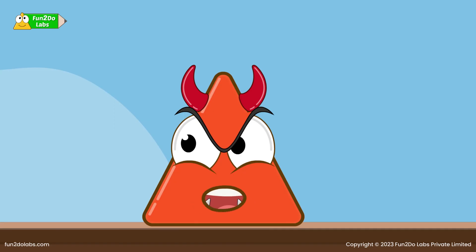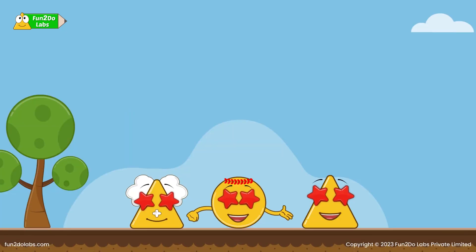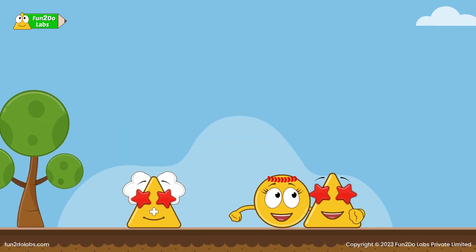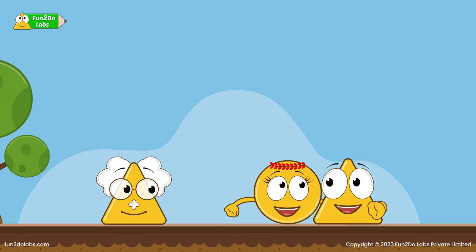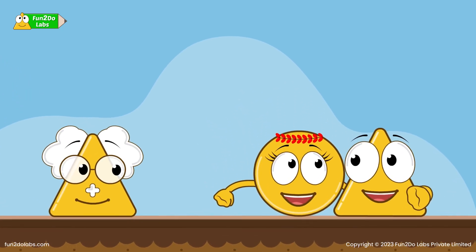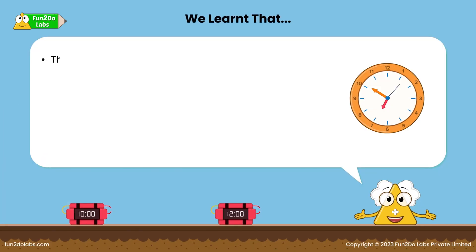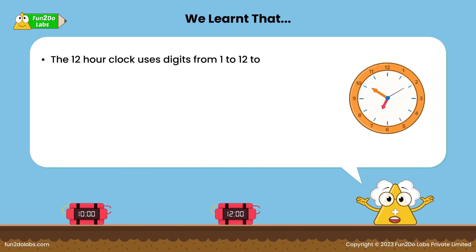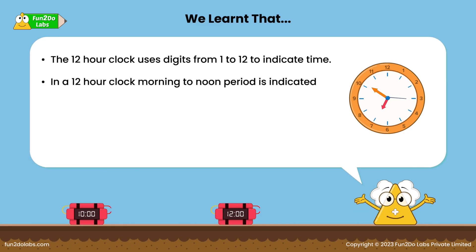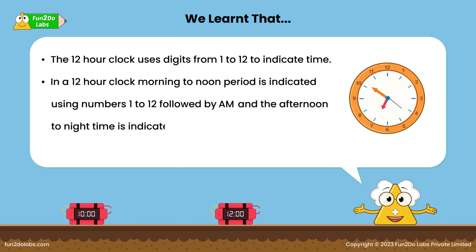The Trio Boss runs away shouting threats at Trejo. It was not an easy day for them, yet they overcame it through patience and courage. We learned that the 12-hour clock uses digits from 1 to 12 to indicate time. In a 12-hour clock, the morning to noon period is indicated using numbers 1 to 12 followed by AM, and the afternoon to night time is indicated using numbers 1 to 12 followed by PM.